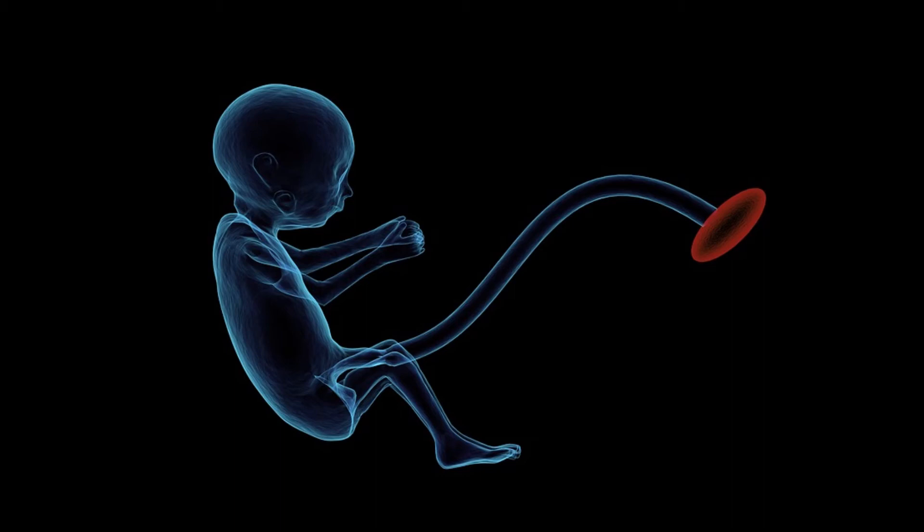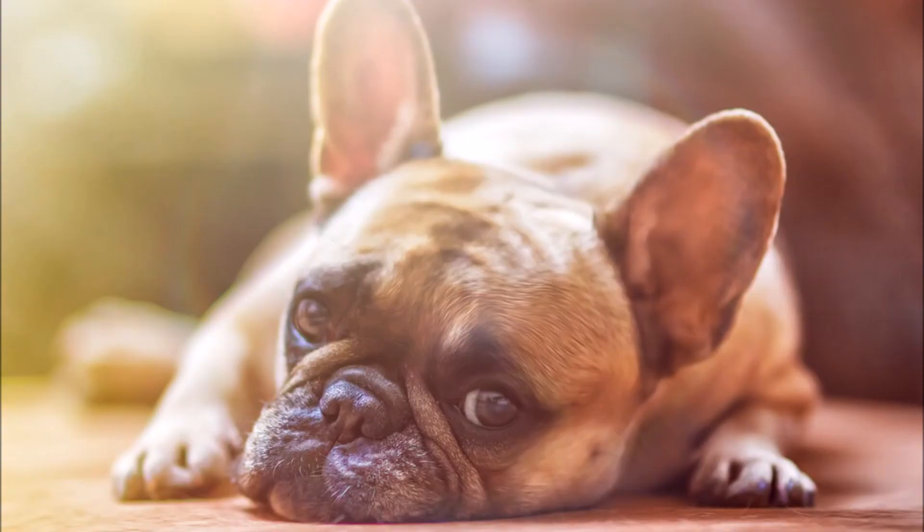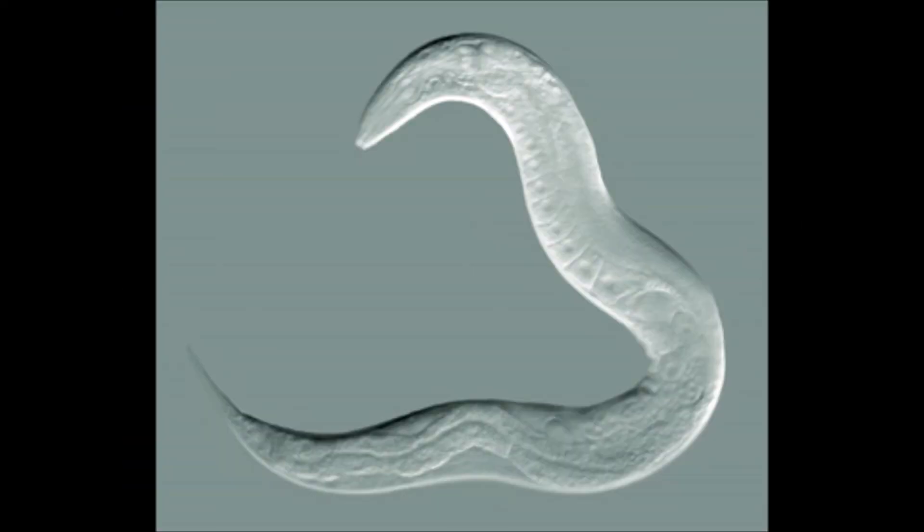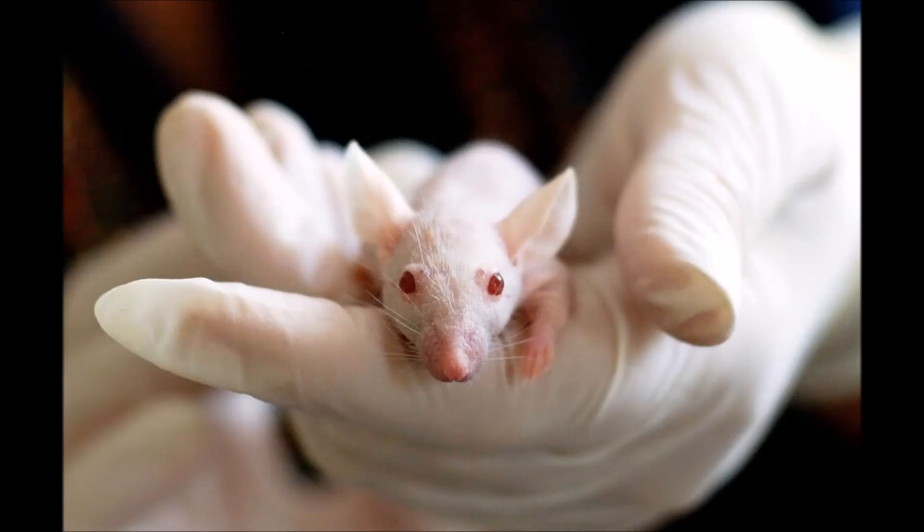This field deals with the development of an organism in terms of how they grow and develop their origin, as well as what happens if these processes during development fail. There are a couple of classic model organisms in this field, which are organisms that have been extensively studied over the years. These include fruit flies, sea elegans, zebrafish, and mice.